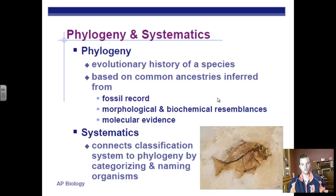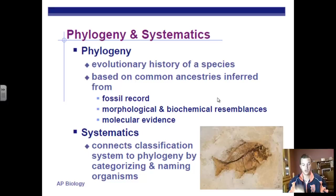To break down these two terms: phylogeny is how we look at the evolutionary history of a species — how things evolved from a common ancestor. The best evidence includes the fossil record, morphological appearances, and biochemical resemblances. For example, all macromolecules — carbohydrates, proteins, nucleic acids, and lipids — are structurally similar across all organisms. We also look at molecular evidence, concentrating more on DNA and RNA.